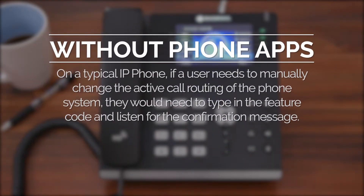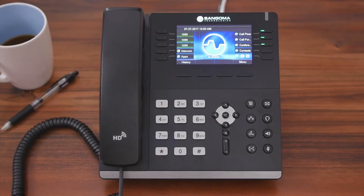On a typical IP phone, if a user needs to manually change the active call routing of the phone system — which is useful for businesses with non-consistent work hours — they would need to type in the feature code and listen for the confirmation message. With many different call flow types in the phone system, having to remember all the different feature codes for a specific flow can be really tricky.